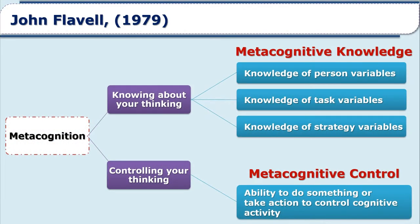According to Flavell, metacognition consists of both metacognitive knowledge and metacognitive experiences or regulation. According to John Flavell in 1979, metacognition includes two parts. First is knowing about your thinking — that is your metacognitive knowledge. Second is controlling your thinking — that is metacognitive control. Metacognitive knowledge includes knowledge of person variables, knowledge of task variables, and knowledge of strategy variables.